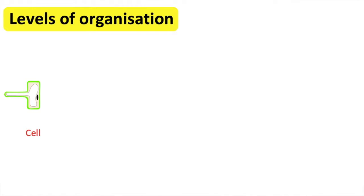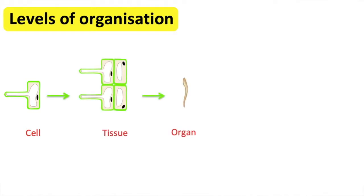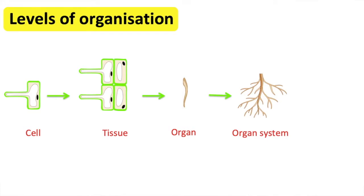Groups of similar plant cells work together to form tissue. Similar tissues then work together to form an organ. All the different organs then work together to form the organism.